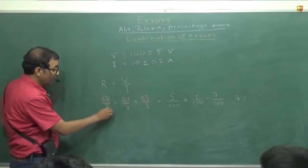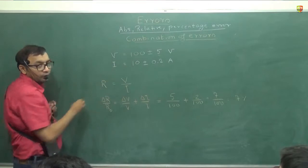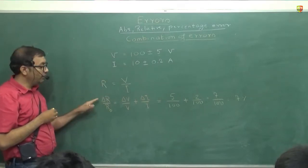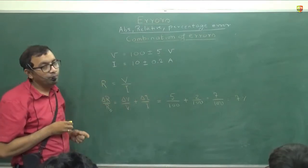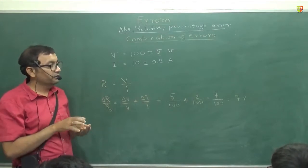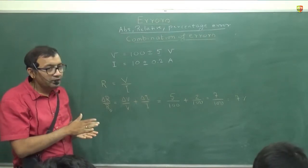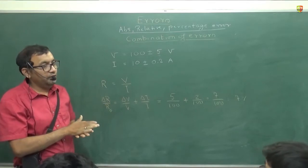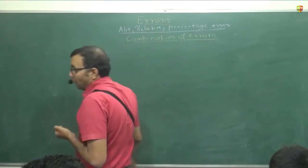And the value of R is 100 by 10. True value is 10. So error will be 10 into 0.7 divided by 100. So 0.7 ohm is the absolute error.